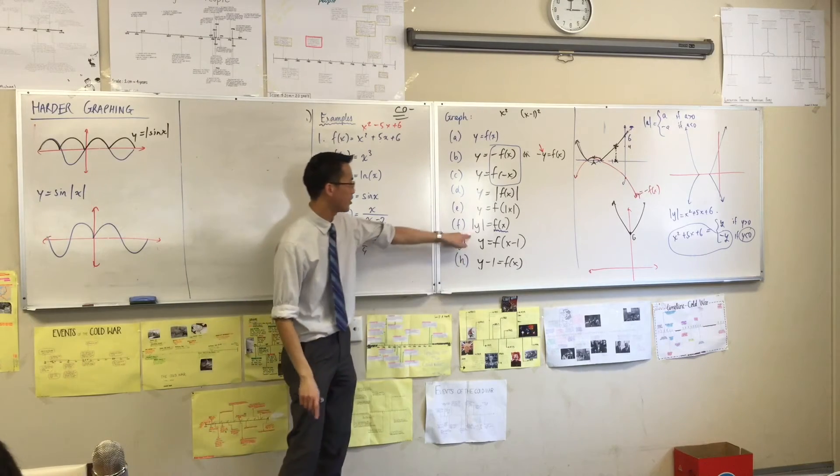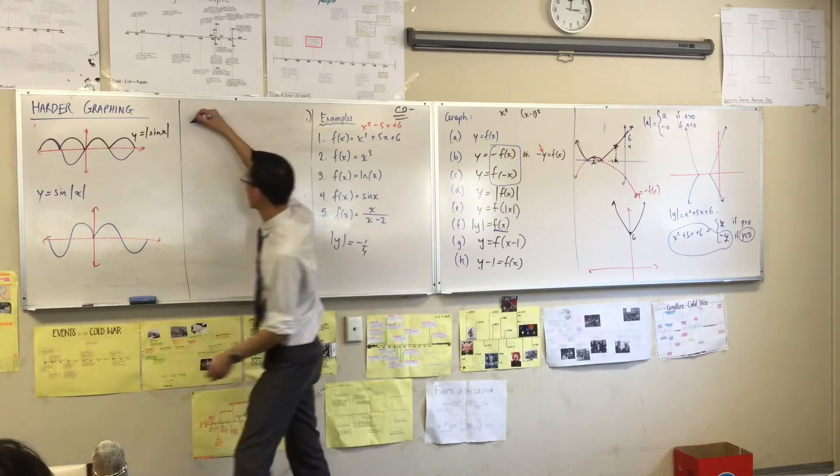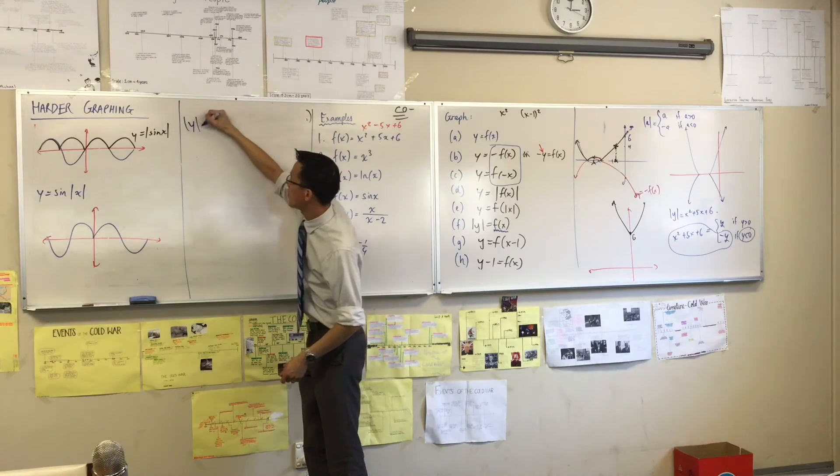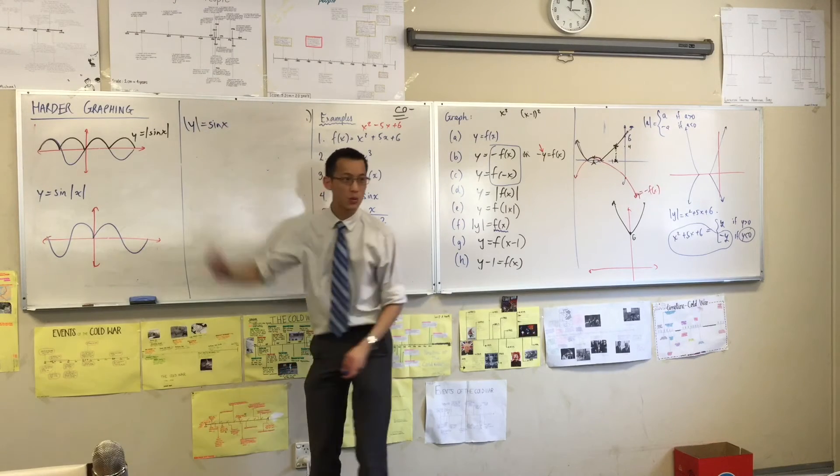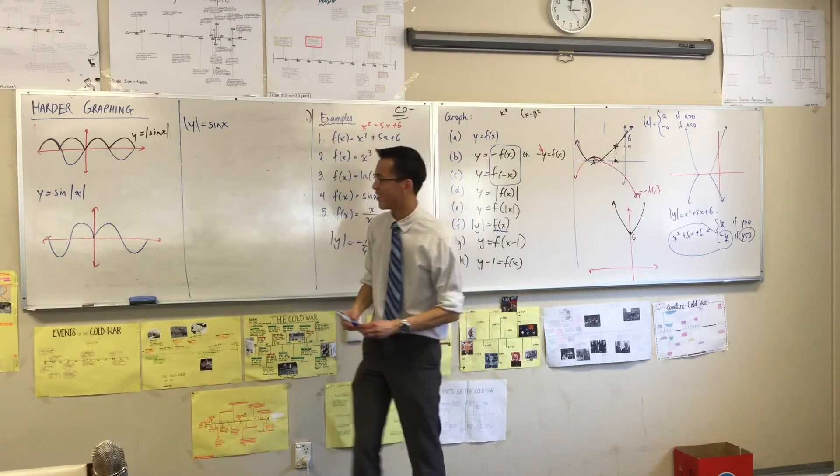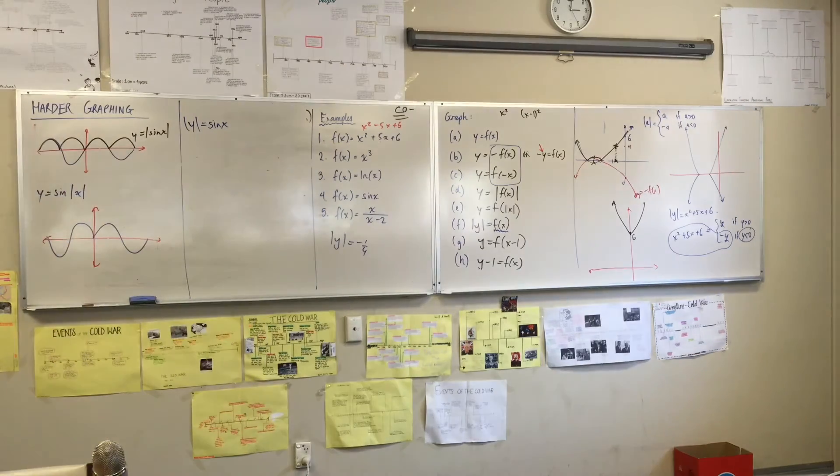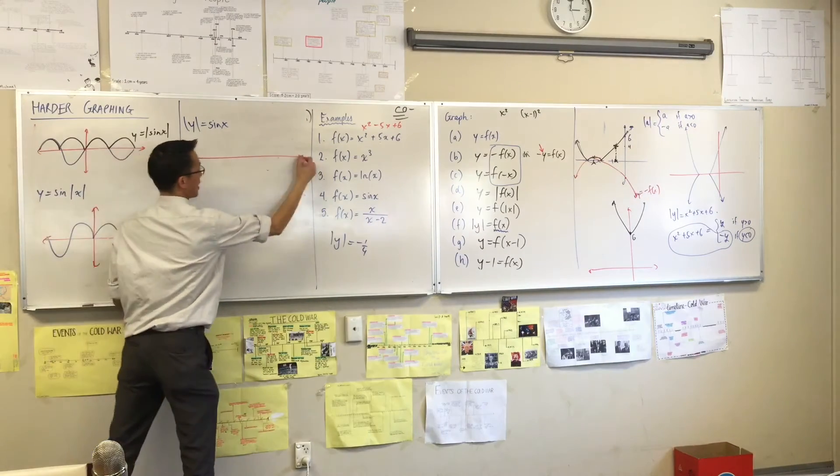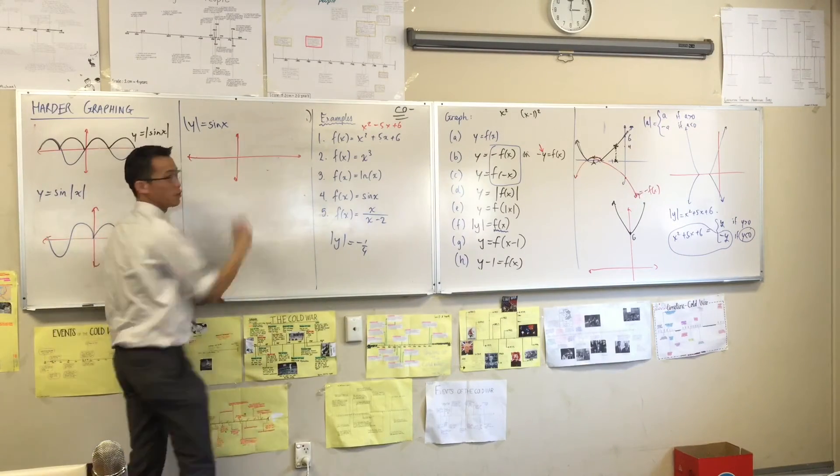Just before you run, can we quickly do, because it's the most fun one, it's why I went straight to this one. The absolute value of y equals sine x. This is going to be fun. Quickly, let's just draw it from negative 2 pi to 2 pi.